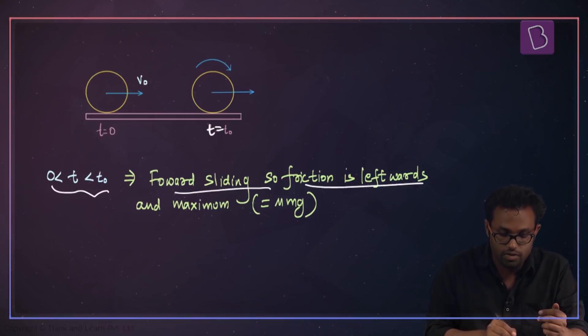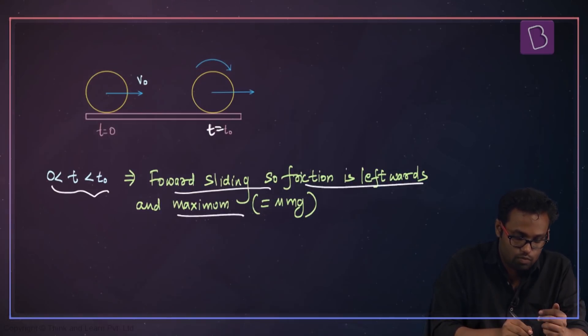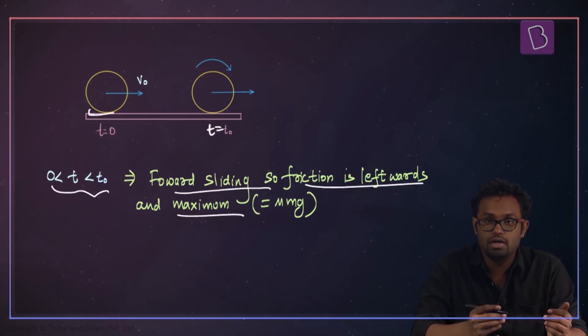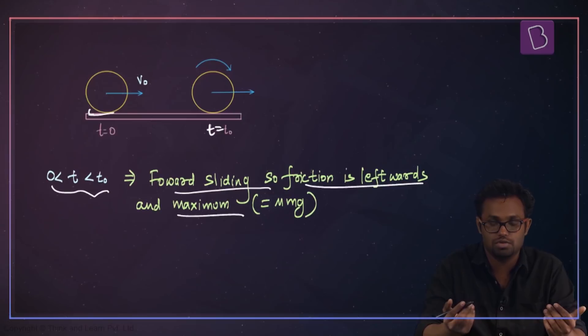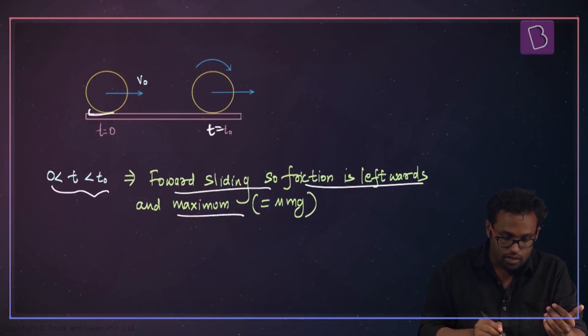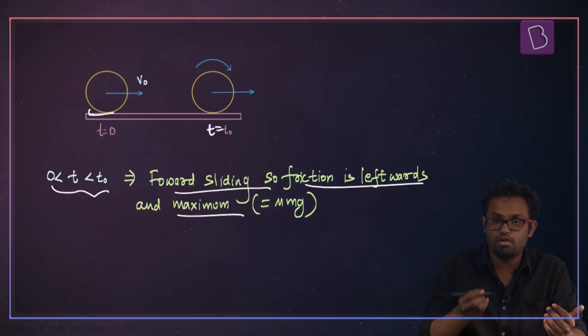So the friction must be leftwards, and it must be maximum because it is already in sliding motion — kinetic friction must be there.